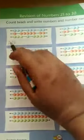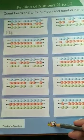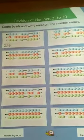Count the beads and write the number in this, page number 24. And in your copy, you will be writing 31 to 40.